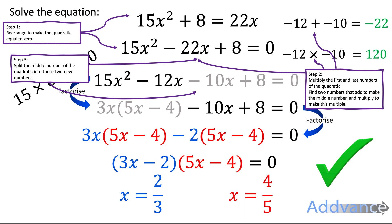Step three, we're going to split the middle number of the quadratic, minus 22, into these two new numbers. There's minus 22x became minus 12x and minus 10x. Step four, we factorise the first two terms and factorise the last two terms.